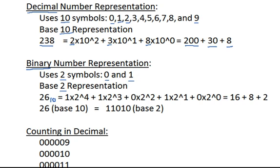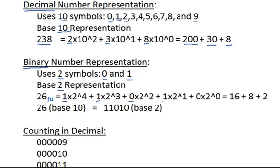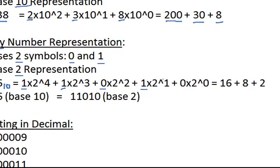We know that 26 is equal to 1 times 2 to the power of 4, which is 16, plus 1 times 2 to the power of 3, which is 8, plus 0 times 2 to the power of 2, which is 0, plus 1 times 2 to the power of 1, which is 2, plus 0 times 2 to the power of 0, which is 0. So we get 16 plus 8 plus 2, which gives us 26.